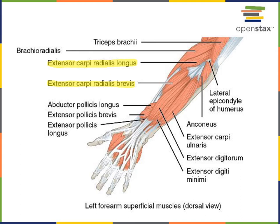Most of the muscles located on the posterior antebrachial region are extensor muscles that perform either extension of the radiocarpal joint or extension of the digits. Moving medially from extensor carpi radialis brevis, the next muscle we see is extensor digitorum, which performs the action of extension of the manual digits — extension of the fingers. Extensor digiti minimi is just medial to extensor digitorum, a slender muscle that inserts into the phalanges of the fifth digit to extend the smallest finger, the pinky finger.